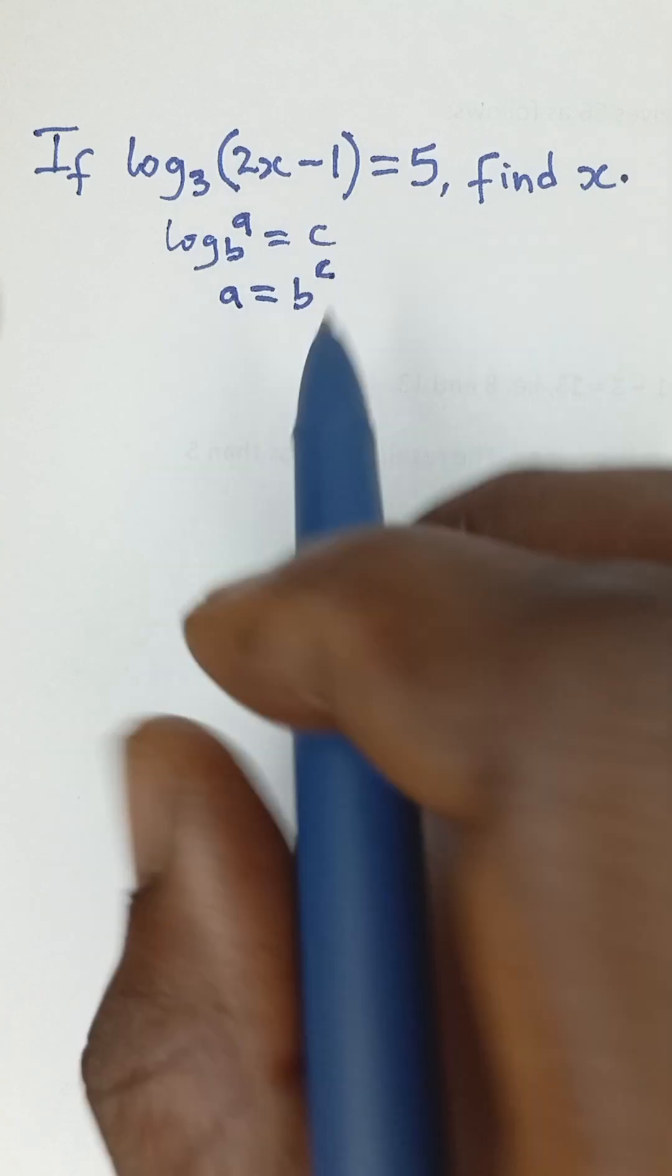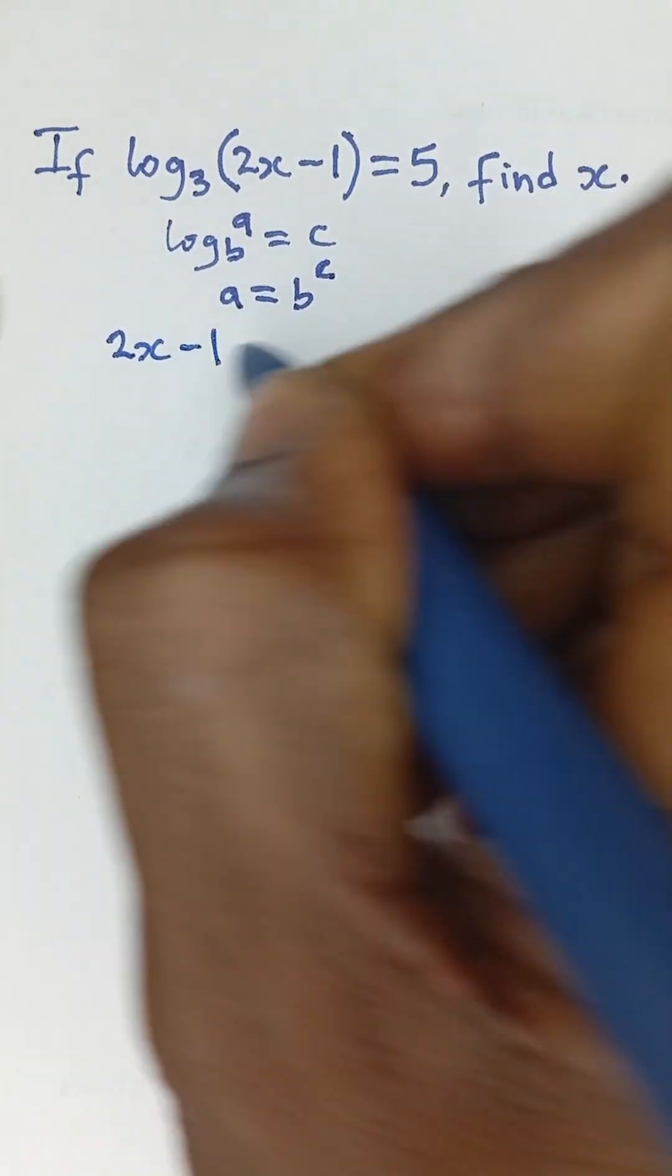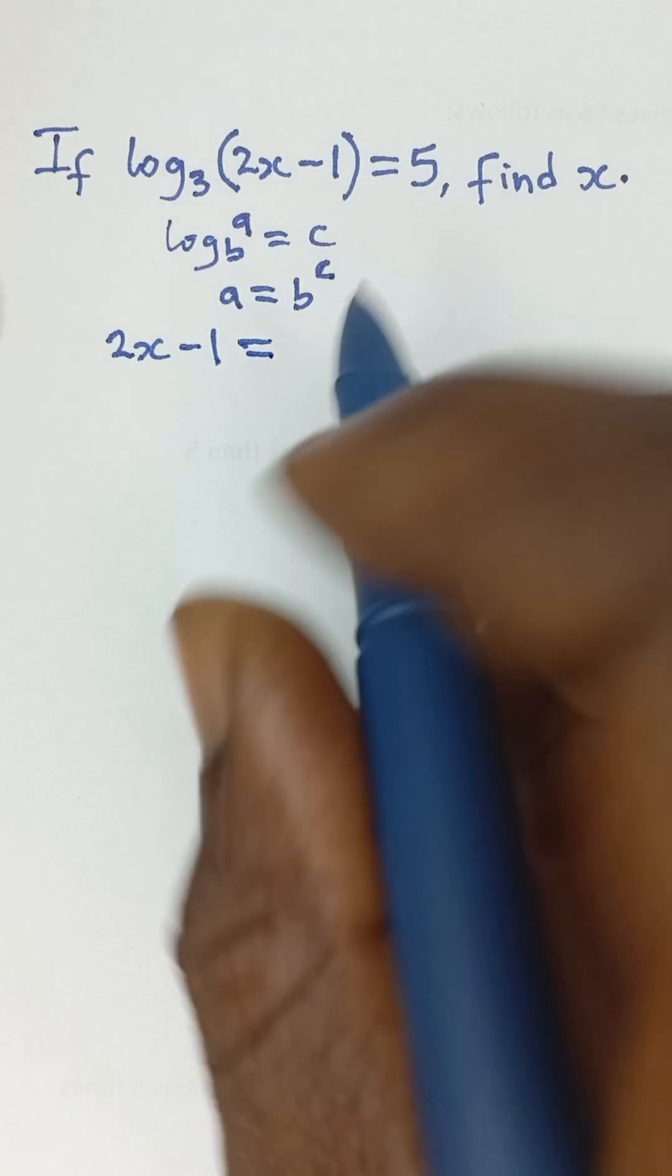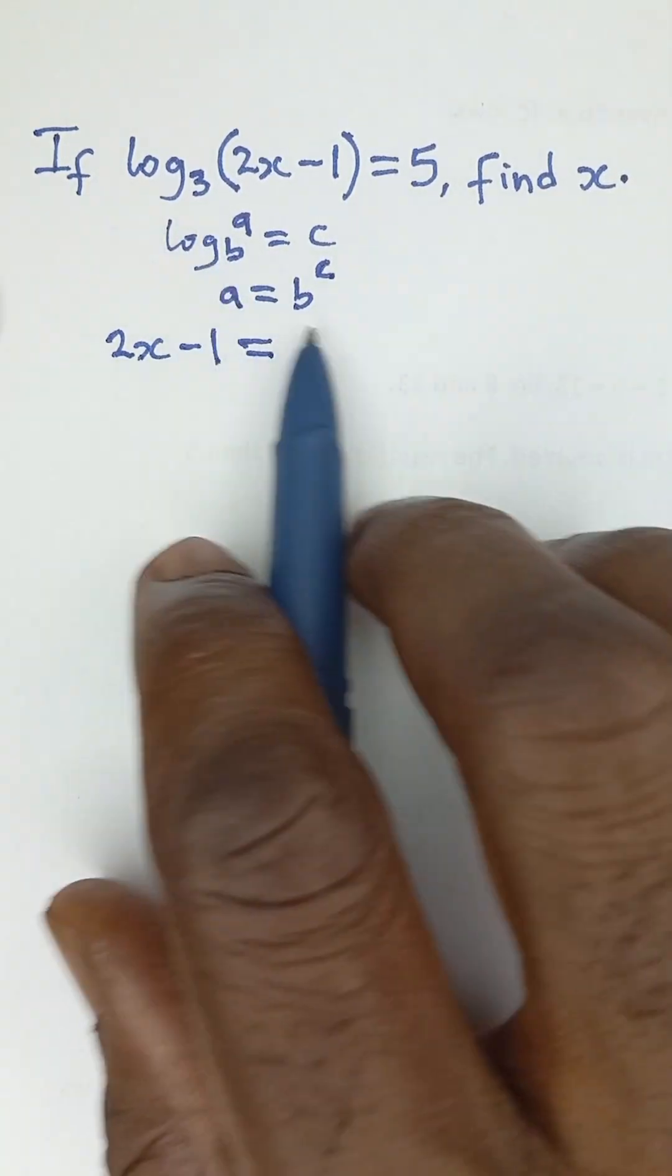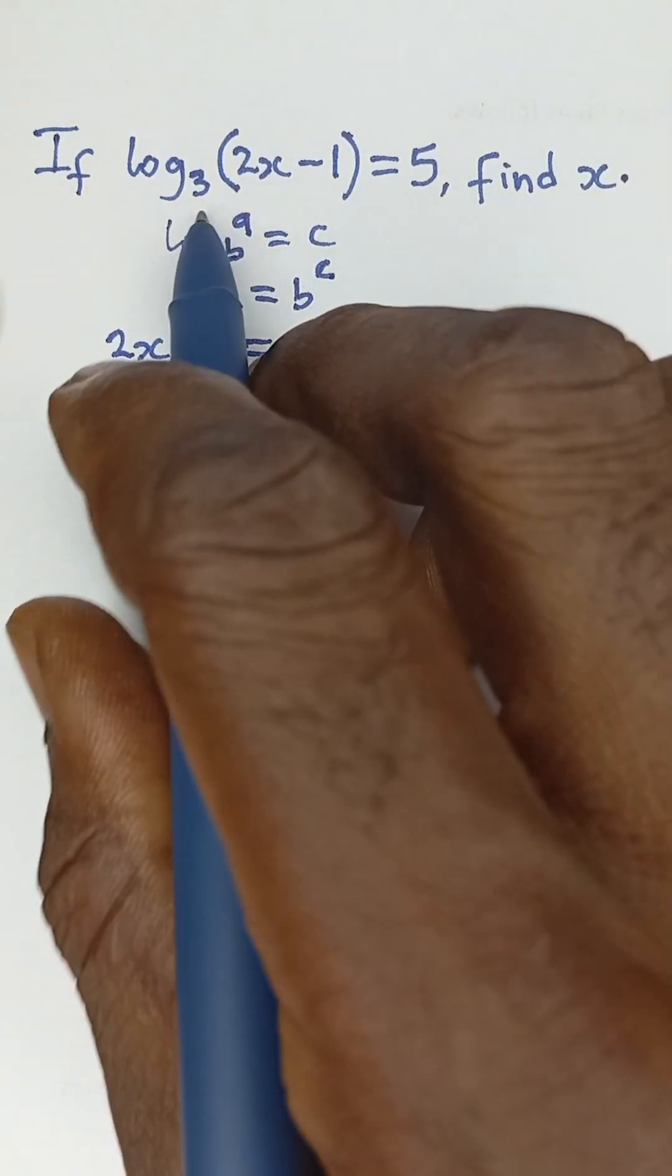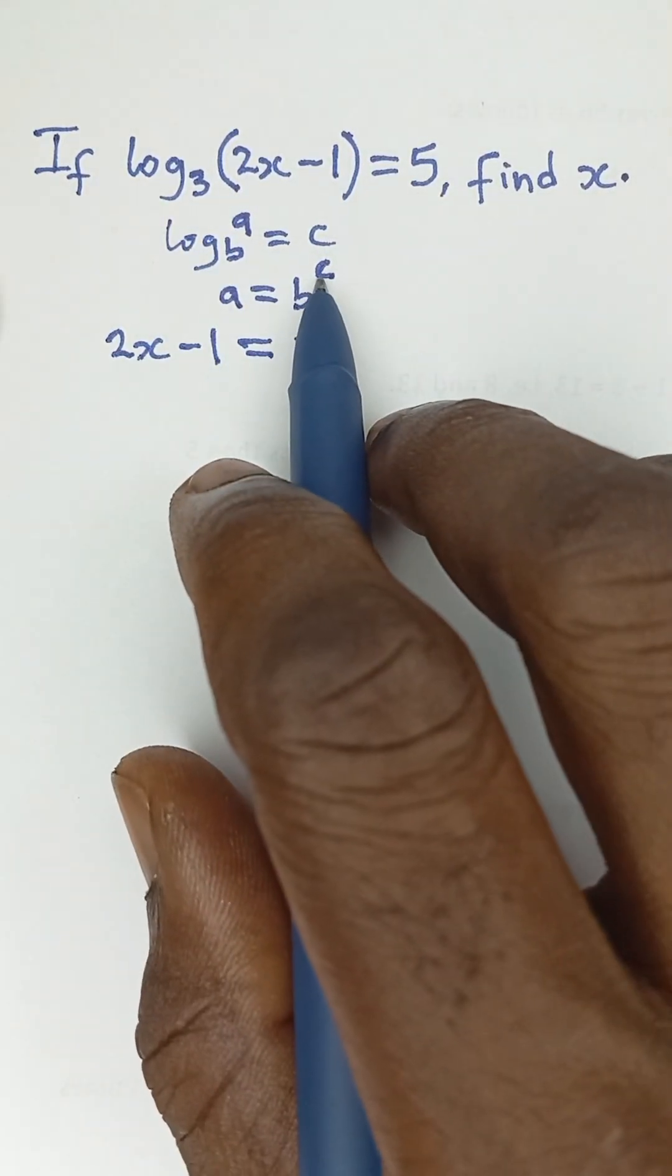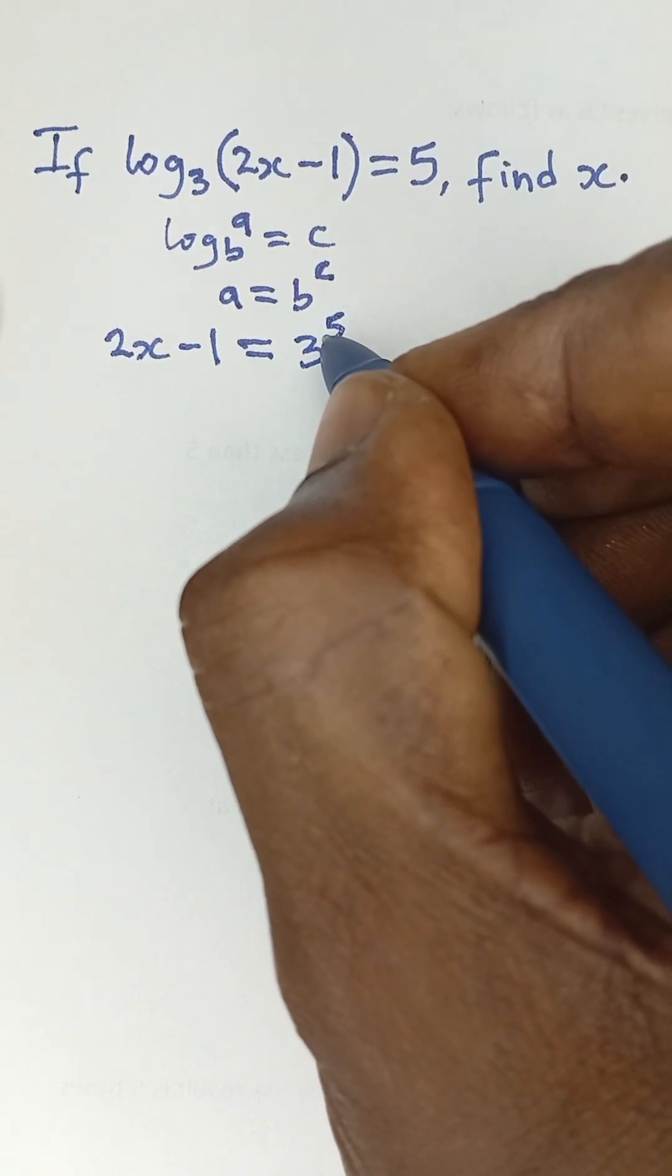So the a here is like 2x minus 1, so I'm going to write 2x minus 1 is equal to the base, which is the b that we have here. So b, which is 3 as the base here, and then the 5 is like c, so 3 raised to the power of 5.